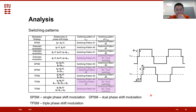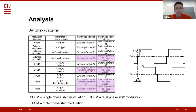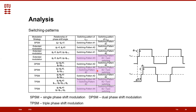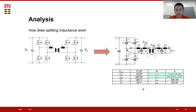Whenever switching pattern three and switching pattern four appear in the converter, they will always involve hard switching. For that reason, we did not do experiments to verify these two switching patterns — we did not want to stress our prototype with hard switching. The equivalent circuit is used for calculations, and this table shows the parameters extracted from the prototype, including the output capacitance of the switches Coss, the parasitic capacitance of the transformer Cp1 and Cp2, with 200 volts on the high voltage side and 50 volts on the low voltage side.